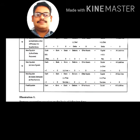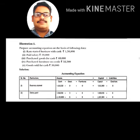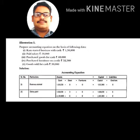The final equation is: Cash + Bank + Stock + Debtors + Other Assets = Capital + Liability. For example, business started with cash ₹1,50,000: cash comes in as an asset and capital is ₹1,50,000 on the other side — both sides are equal.